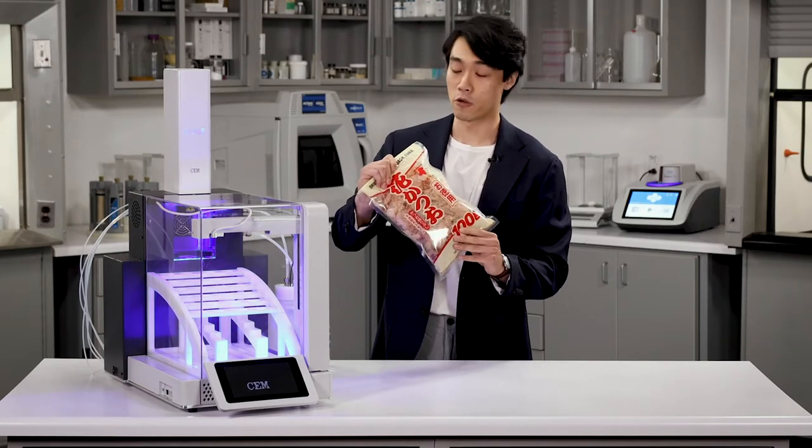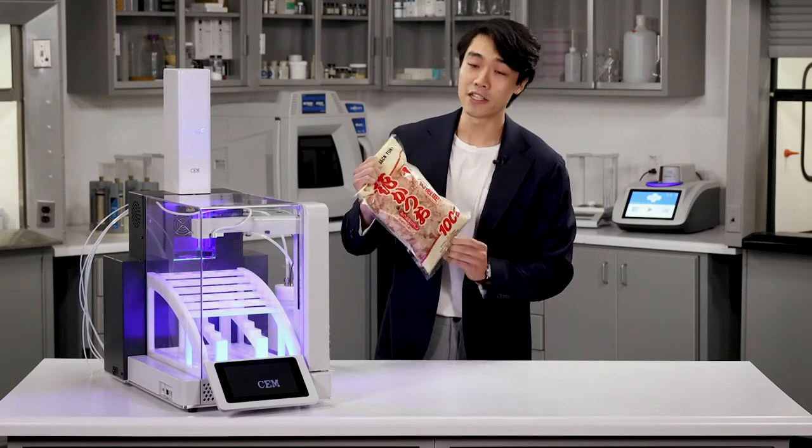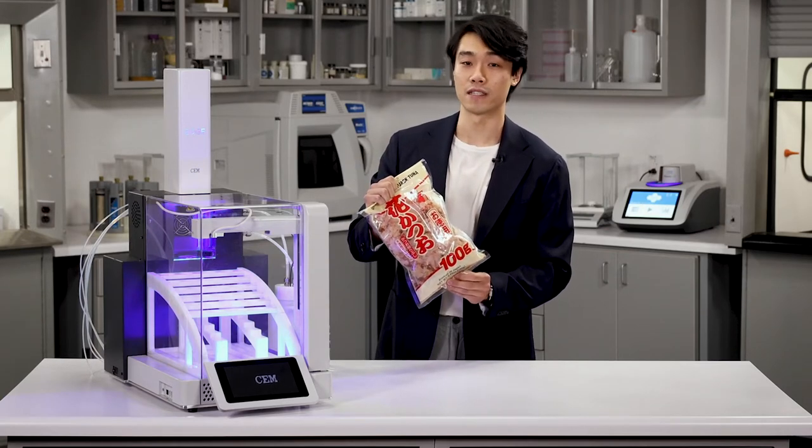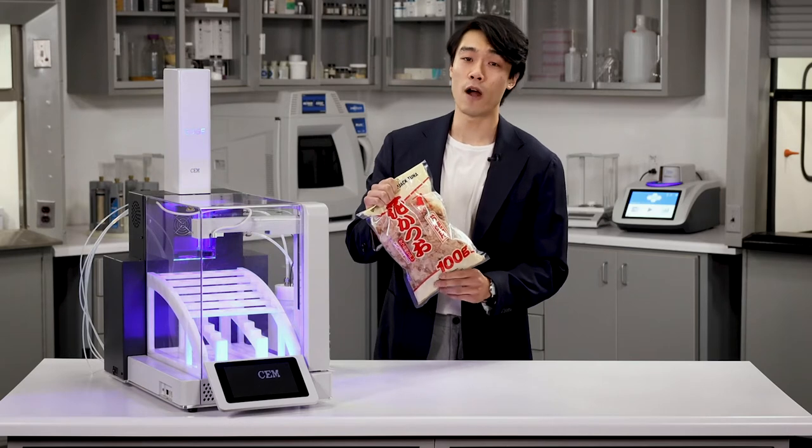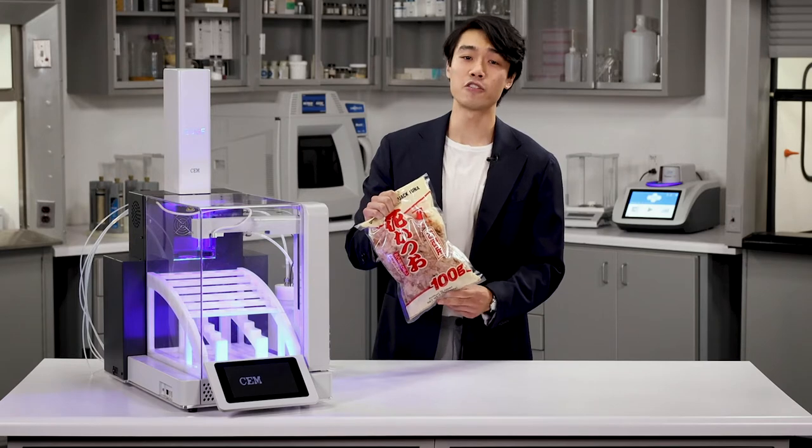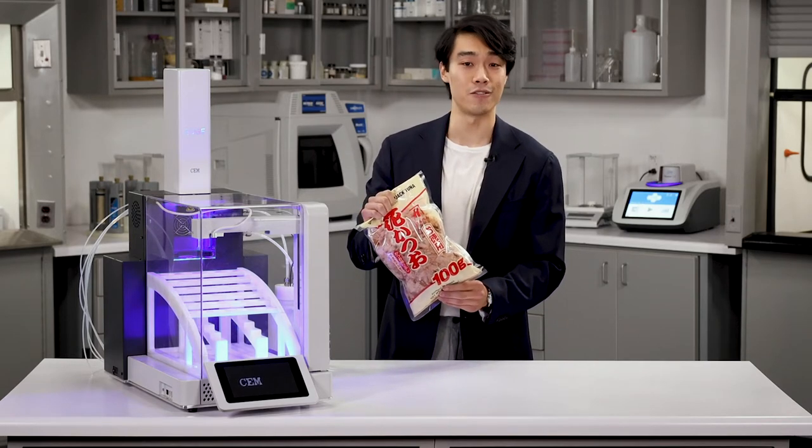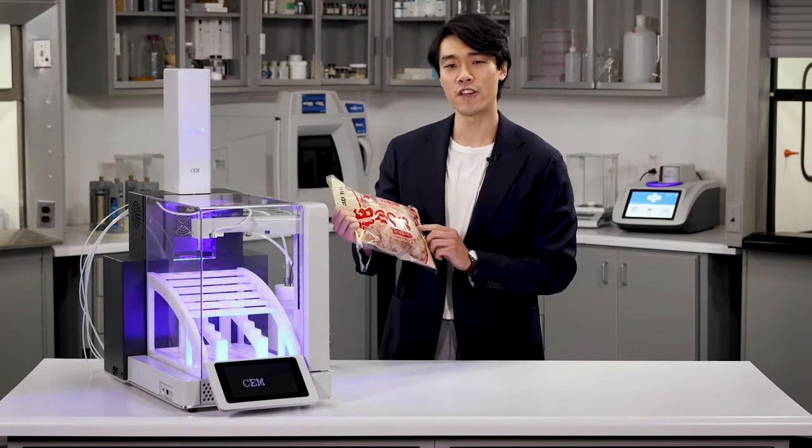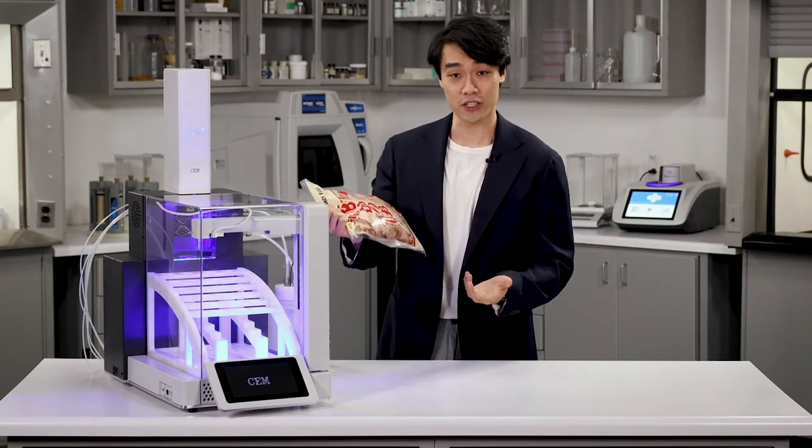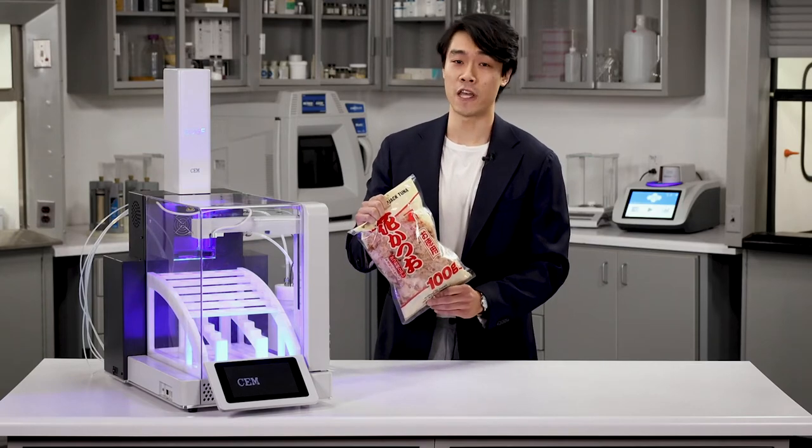This, my dear audience, and you'll excuse my pronunciation, katsuobushi, also known as bonito flakes, is used in a variety of Japanese cuisines. It's used to make dashi, a broth basis for soups, and also as a topping for foods like okonomiyaki. Its distinct umami flavor derives from the fact that it's made from dried fermented skipjack tuna. Now, how does fish go from fish into flakes? Well, I think that's a tale for sample prep.